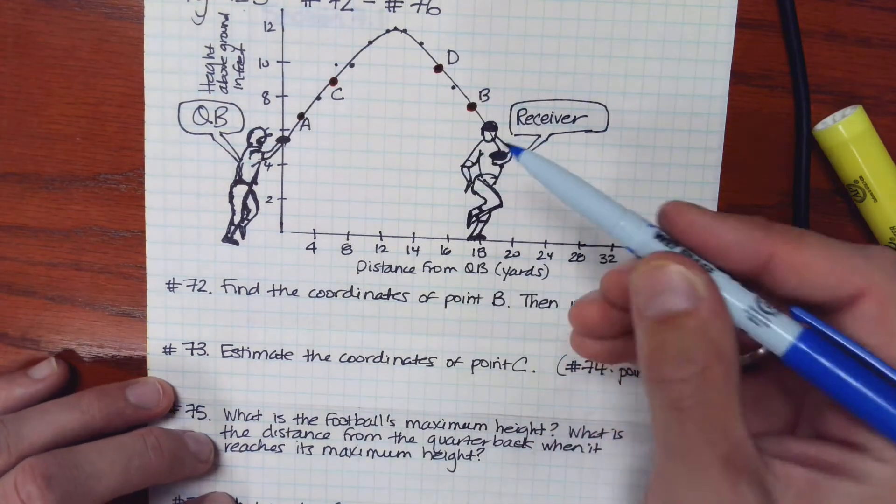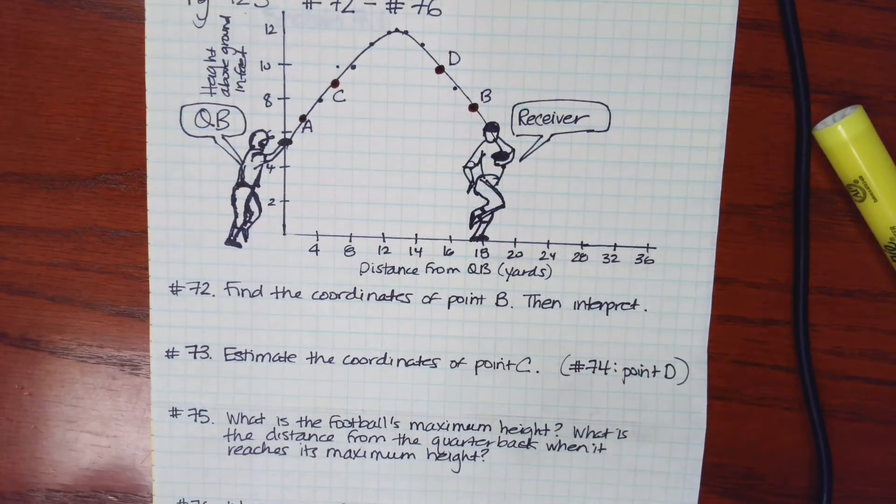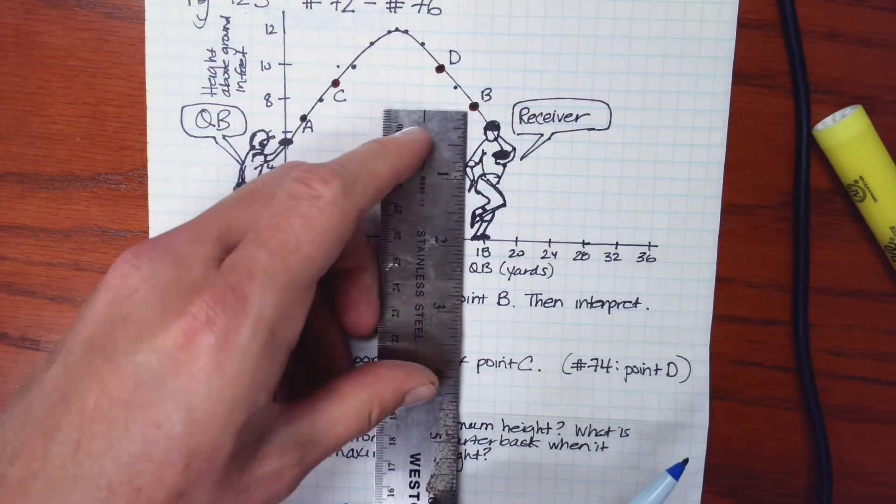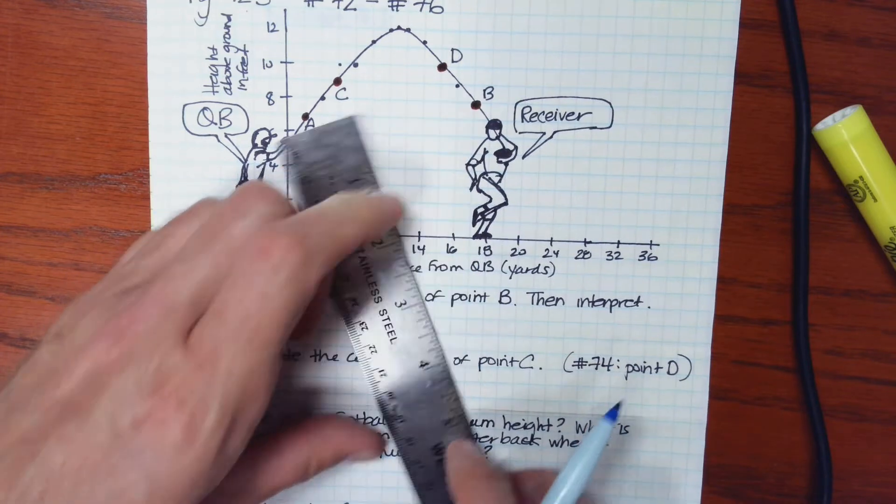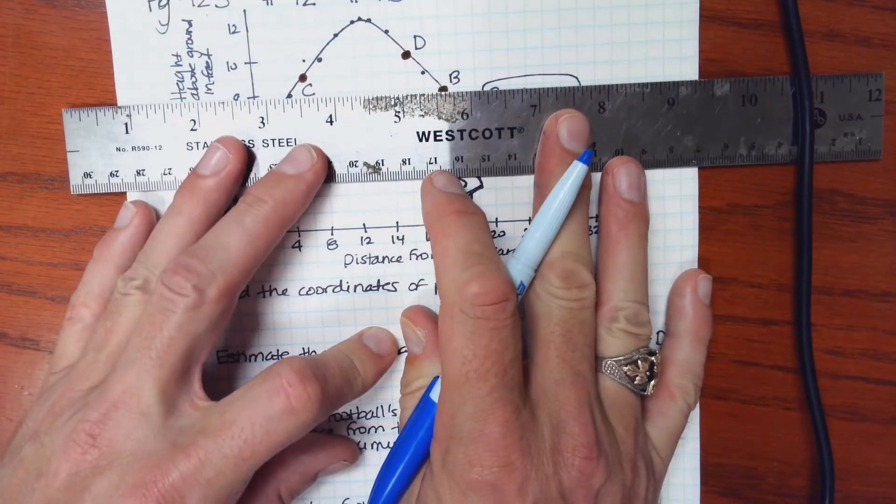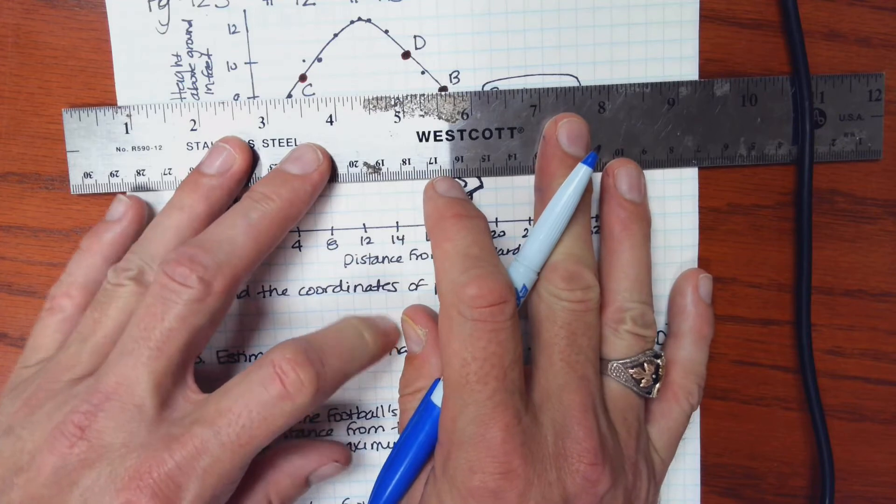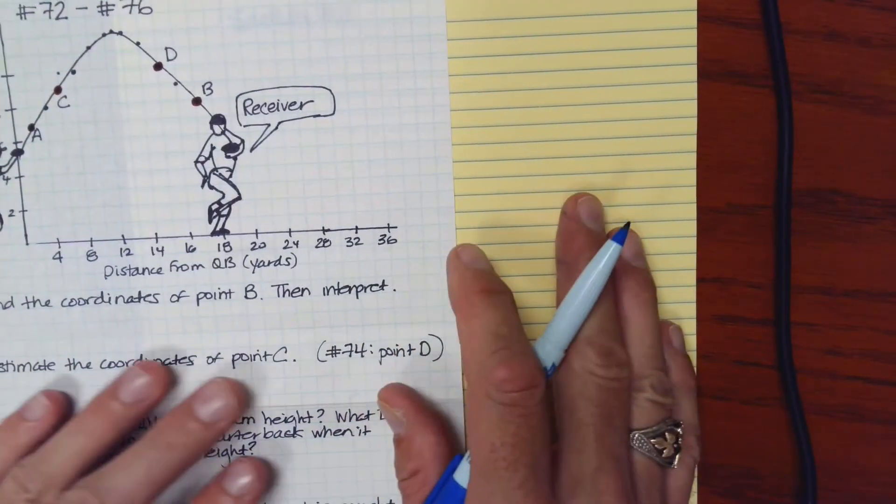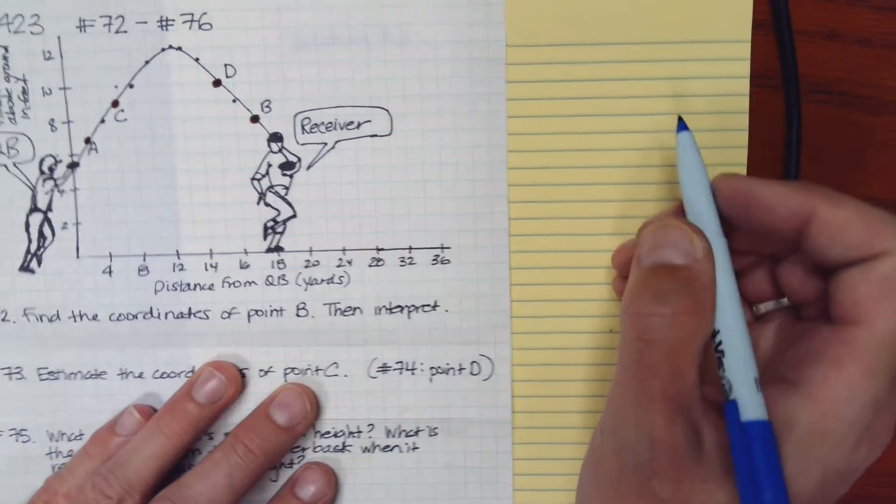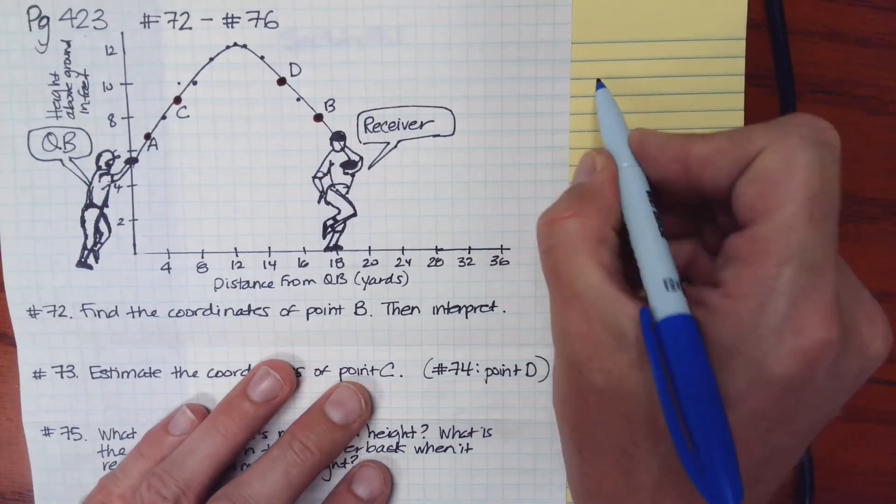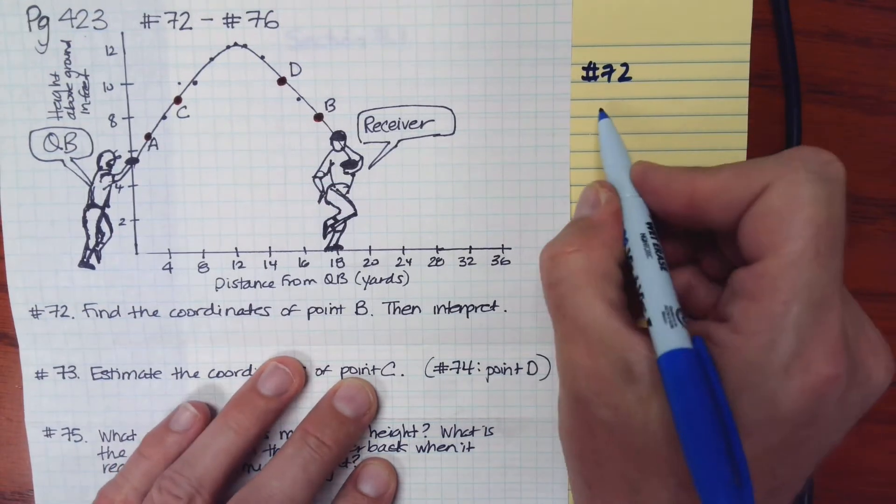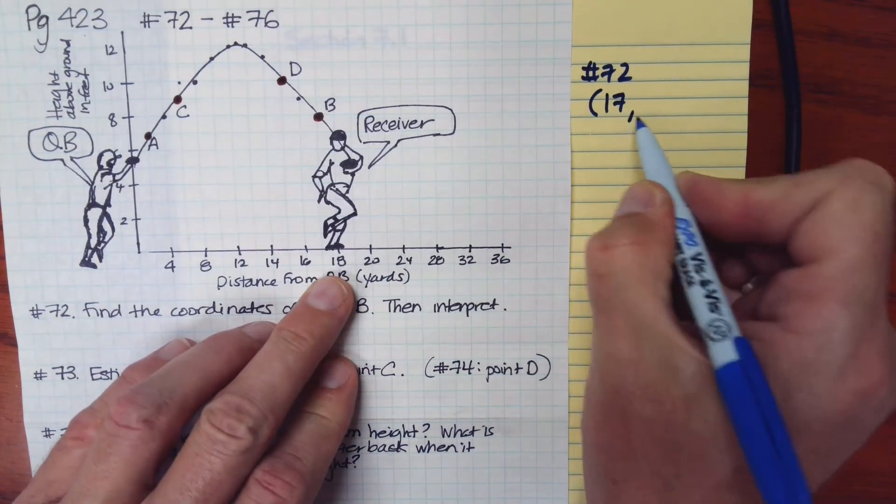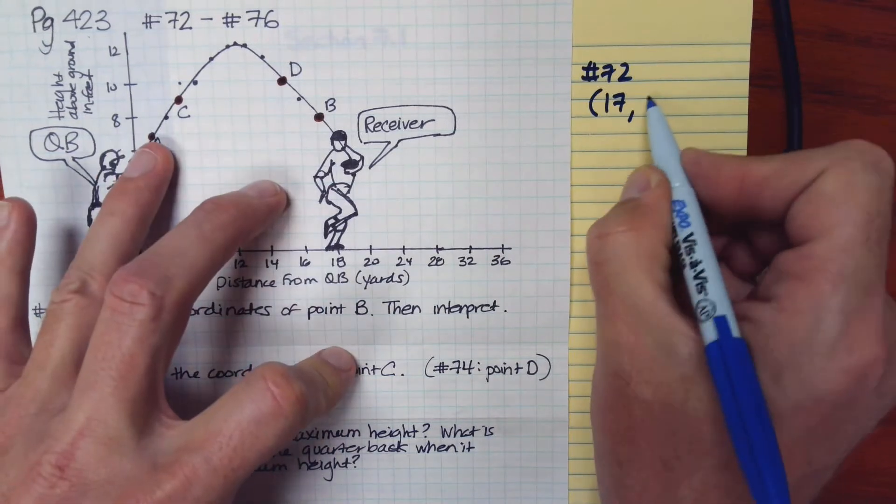So point B, it looks to me like that is intended to be at the marker for 17 and we're looking across this way, that's at 8. So this would have the ordered pair, so in my response I would say to number 72, the ordered pair that's represented there, the x-coordinate was 17 and the y-coordinate was 8.